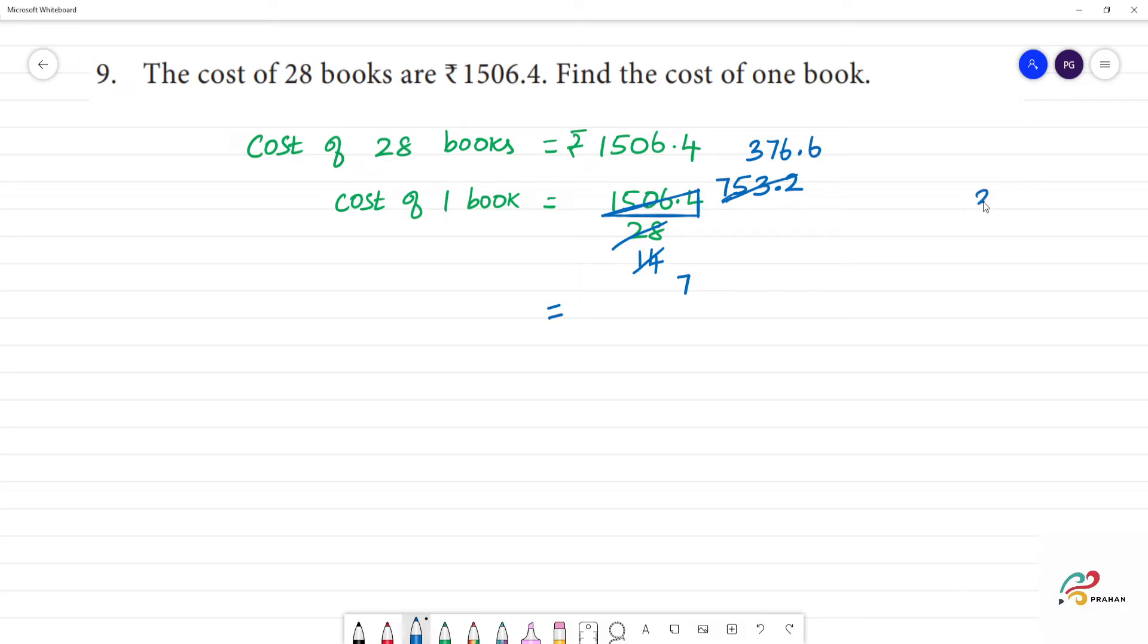Now, we do division. 3, 7, 6, point, 6. This is easy to cancel. We divide by 7, then we will divide by 5, 5, 7, 35.